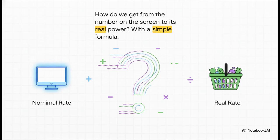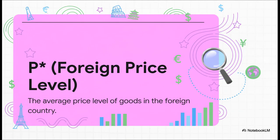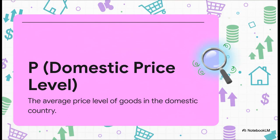Turns out, it's all in a pretty simple formula. Let's break down the pieces one by one. First up is E — this is our starting point, the nominal exchange rate we were just talking about, the standard face value number you'd find online or at any bank. Next, we need something called P-star. All it means is the price level in the foreign country — a general average of how much stuff costs over there. This is a super important piece of the puzzle. And the final piece is just P, no star this time. This is the exact same concept but for us, right here at home — our domestic price level, basically the average cost of things in our own country.